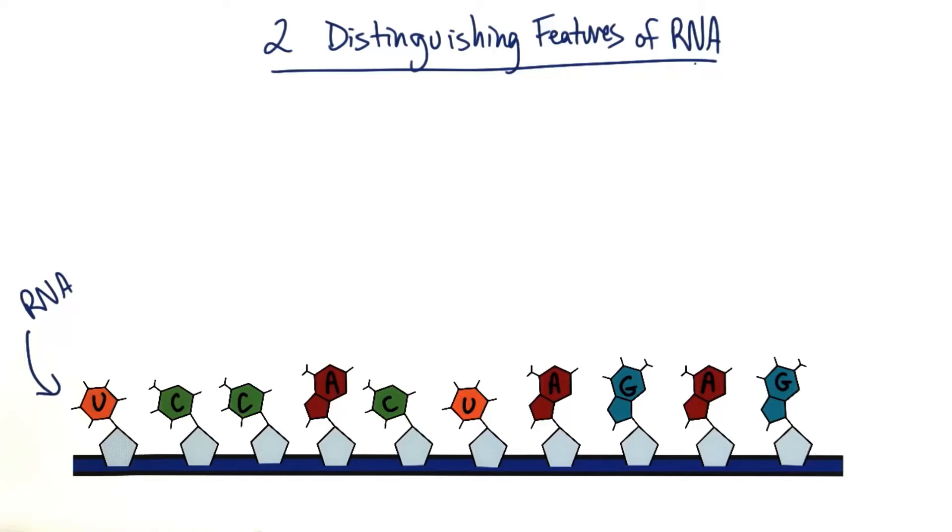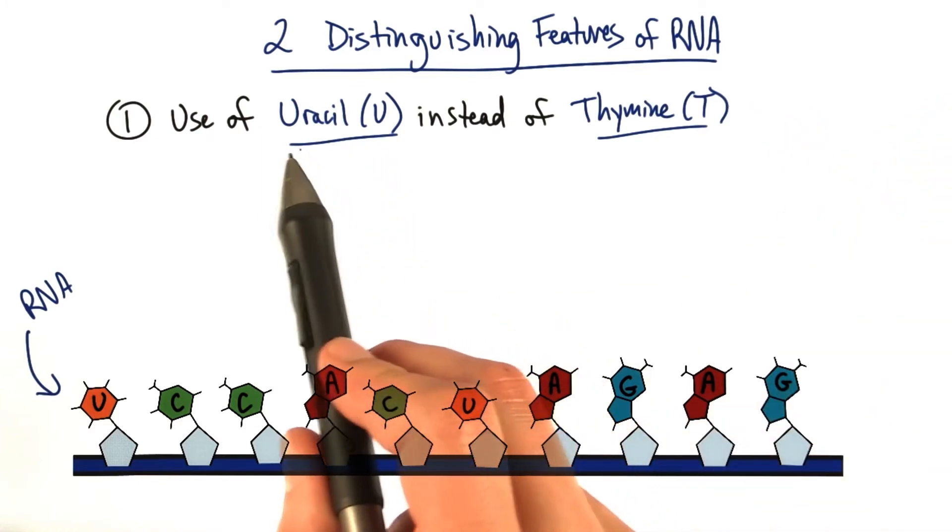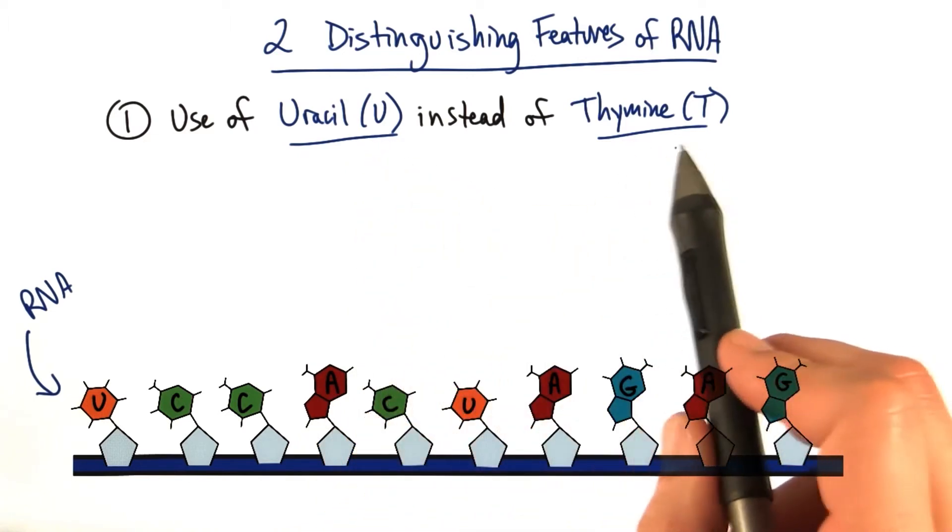Now there are two main features of RNA that distinguish it from DNA. The first is that RNA uses a different nitrogenous base attached to its nucleotides called uracil, or U, instead of thymine, T.